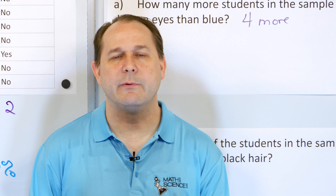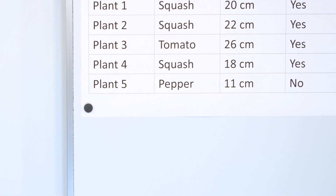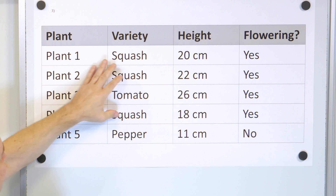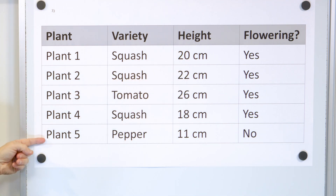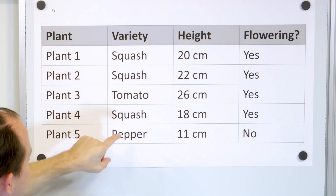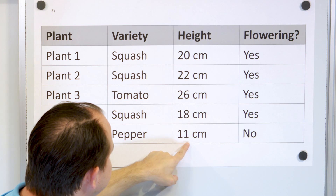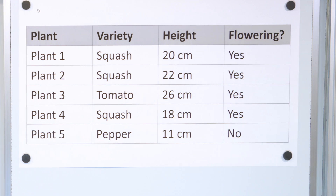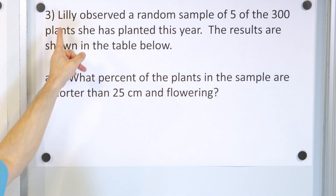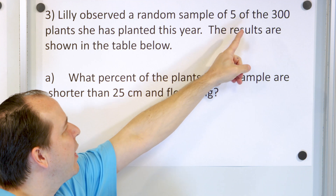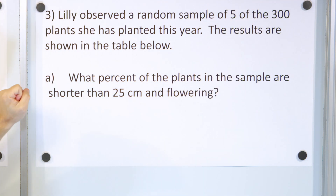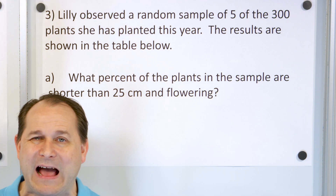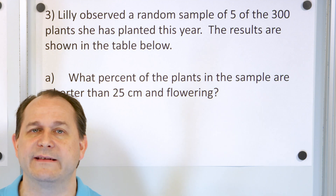Let's look at our last problem. We have a table involving plants — five plants recorded with type, height in centimeters, and whether the plant is flowering. Lily observed a random sample of five of the 300 plants she planted this year. The sample is five, but her garden has 300 plants total — that's the population.